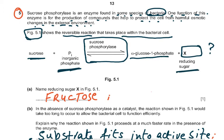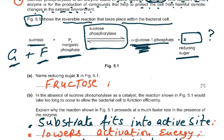We know sucrose is made up of glucose plus fructose. We have the glucose accounted for here, so the reducing sugar X must be fructose. This is part of the syllabus: sucrose is a disaccharide made up of glucose and fructose. So fructose was the answer to that — you get a mark for that.